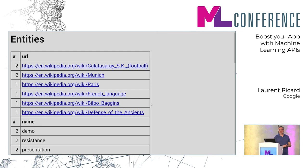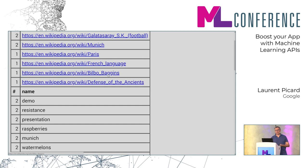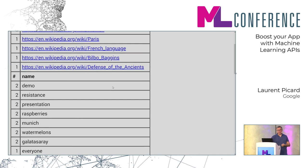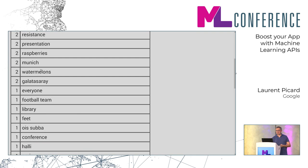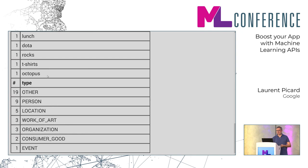Let's see the entities you've been talking about. Someone talked about the Galatasaray Football Club. Two of us — including myself — talked about Munich. One about Paris, one about French, one about Bilbo, one about defense of the ancients. The names and topics that came through include demo, resistance, presentation, raspberries, Munich, watermelons. You can get an idea — and you can do a lot more.